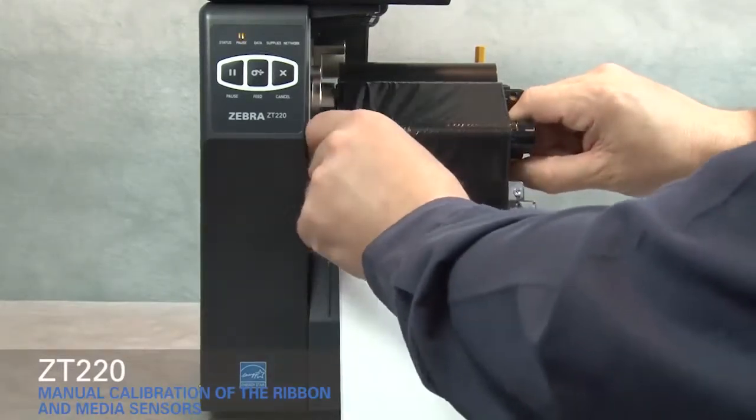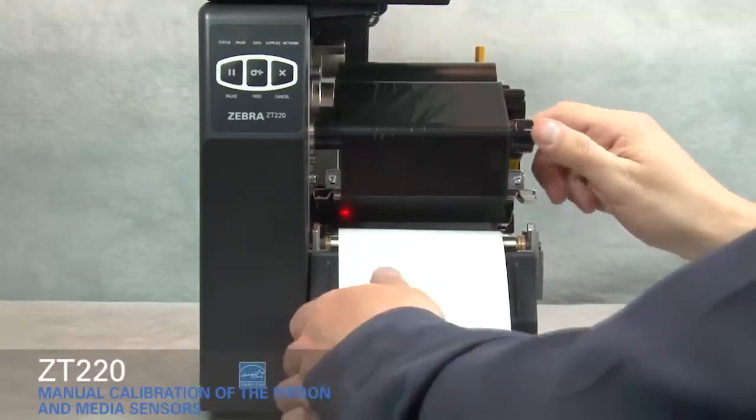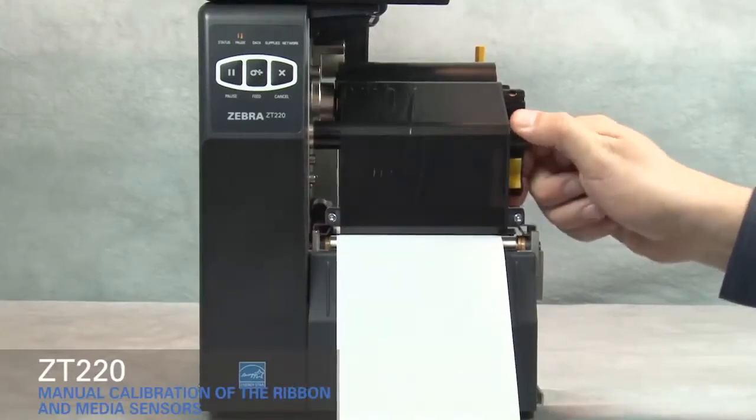Open the printhead. Straighten the ribbon. Turn the ribbon spindle to the right to remove ribbon slack. Pull the media forward until the label is positioned under the media sensors.